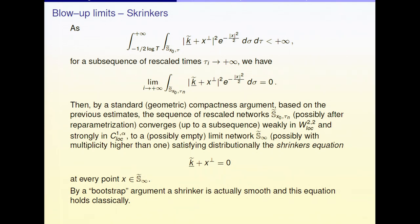We call a network satisfying k + (x · n)/2 = 0 a shrinker network. The reason for this name is that if a network satisfies this equation and you let it evolve by curvature, it simply shrinks down homothetically to the origin. All this is an extension of the work of Huisken for hypersurfaces and curves, extended here to the network flow.